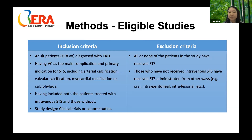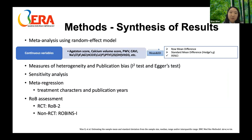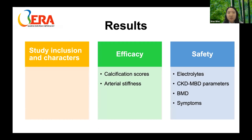Continuous variables were converted to mean and standard deviation and synthesized using a random effects model. Heterogeneity and publication bias were measured using specific tests. Sensitivity analyses were performed in multiple ways, and meta-regression assessed the relationship between effect size and treatment factors including publication years. Risk of bias assessment used Cochrane tools ROB2 or ROBINS-1. Results will be presented in three parts: study inclusion and characteristics, efficacy parameter analysis, and safety analysis.